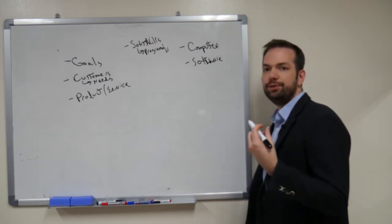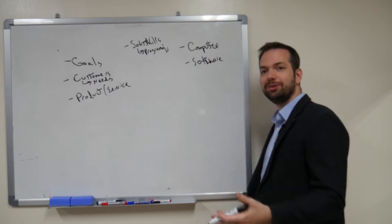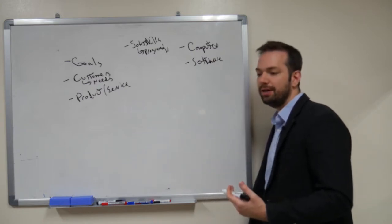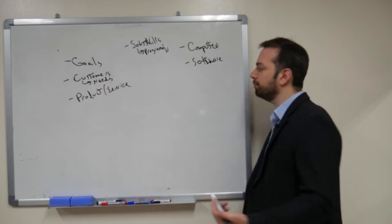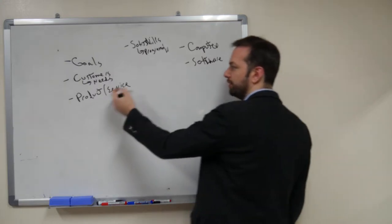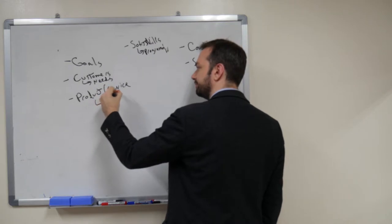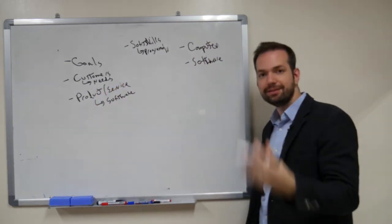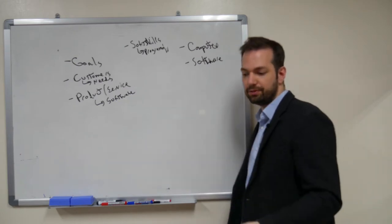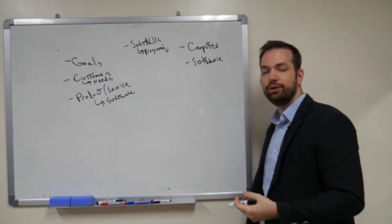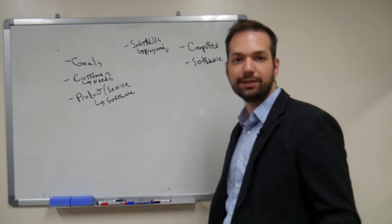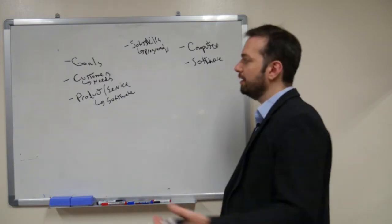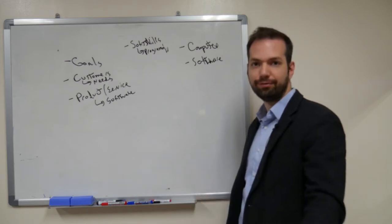Now, if you create your computer game on your computer and have software that supports you, what you're actually producing is also software — specifically a video game that needs to be installed. That software could be for a computer, it could be for Xbox, PlayStation, or any of the video game platforms. So you are producing software for some platform.